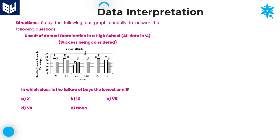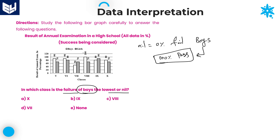Next question: In which class is the failure of boys the lowest or nil? Nil indicates 0% fail. We are talking about boys — is there any class where boys have 100% pass, meaning 0% fail? Boys belong to white color boxes. Looking at the values: boys pass percentage is 90, then 90, then 50, then 100 in class 8. If boys pass percentage is 100, automatically fail percentage is 0, which is called nil. That is class 8 — class 8 is the right answer.